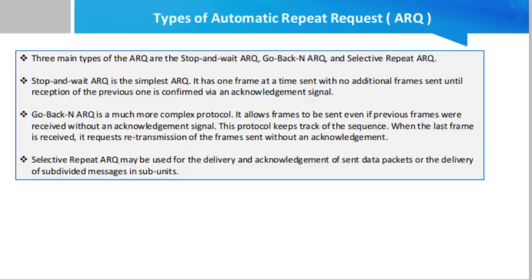There are basically three main types of ARQ: Stop-and-Wait ARQ, Go-Back-N ARQ, and Selective Repeat ARQ. Stop-and-Wait ARQ is the simplest ARQ — it has one frame at a time sent, with no additional frames sent until reception of the previous one is confirmed by an acknowledgement signal.